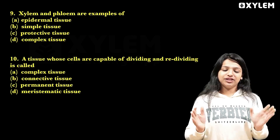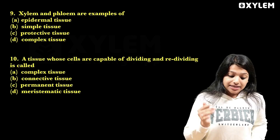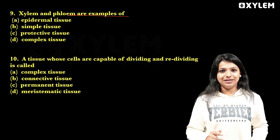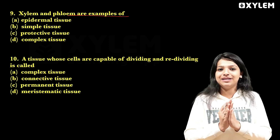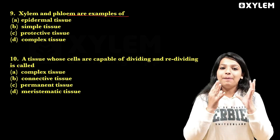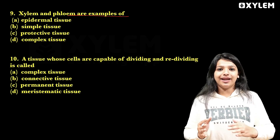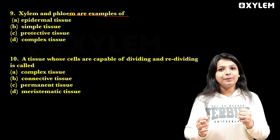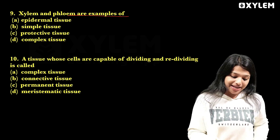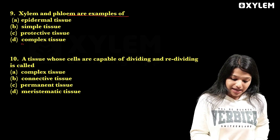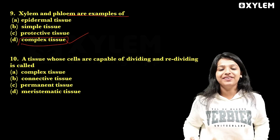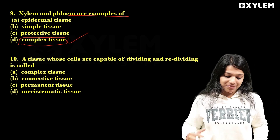Ninth question: xylem and phloem are examples of what? In our plant tissues we have simple tissues and complex tissues. Complex tissues are the examples — xylem and phloem. So option D is the correct answer.